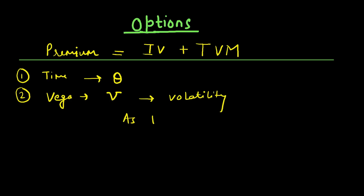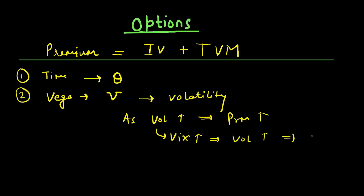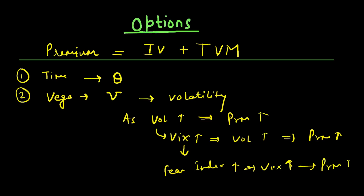The second factor is vega, which you can understand in terms of volatility. As volatility increases, option premium tends to go up. Volatility is measured in terms of VIX — as VIX goes up, volatility in the market goes up and this leads premium to move upward. You can also understand VIX as the fear index. When fear increases — due to big events, big news, or wars — VIX tends to go up, increasing volatility and ultimately increasing premiums.